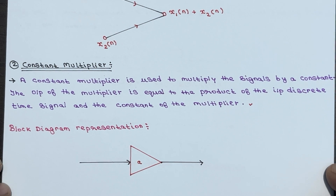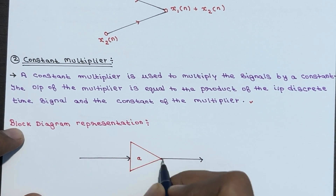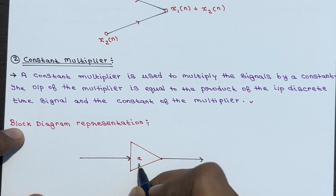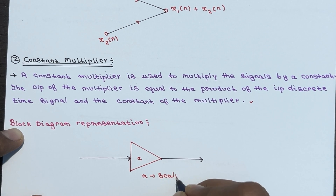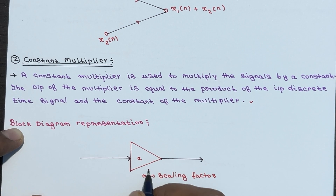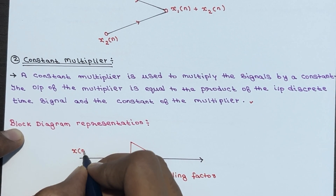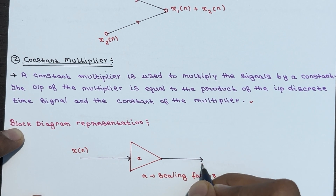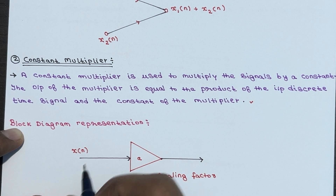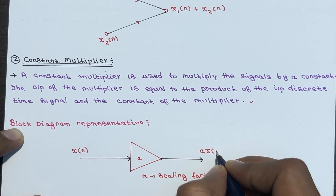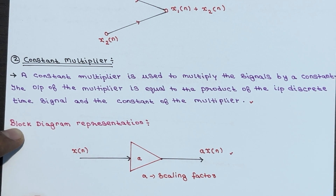Let's explore the block diagram representation for the constant multiplier. Here is the constant multiplier element, where 'a' is the scaling factor. The input is x of n and the scaling factor is a, so the output is simply a multiplied by x of n.